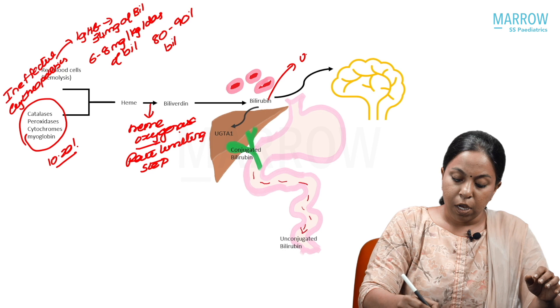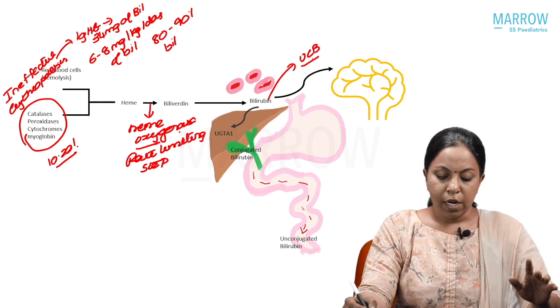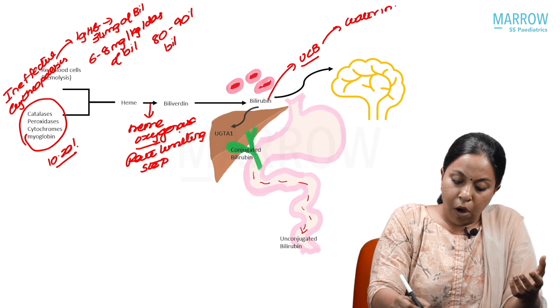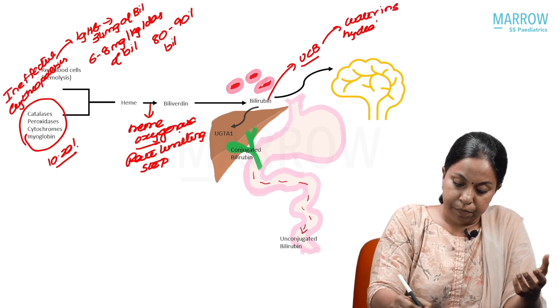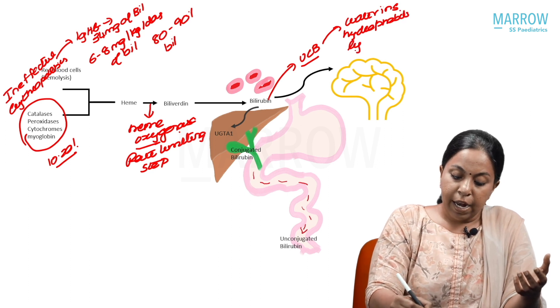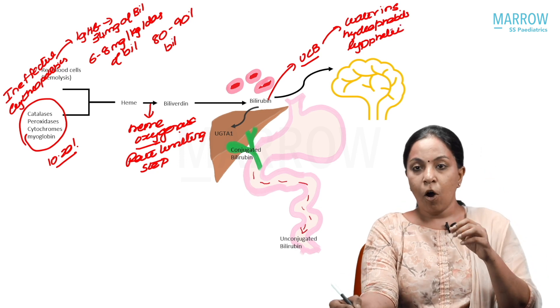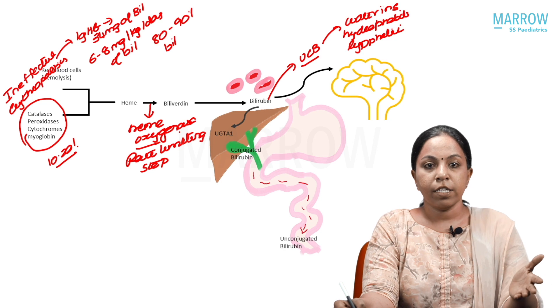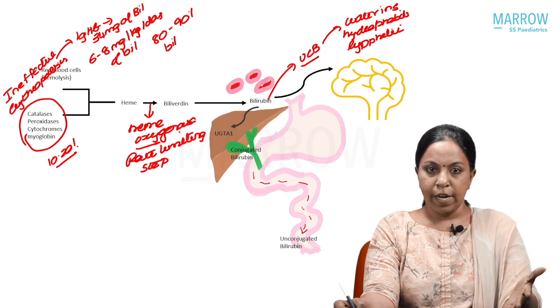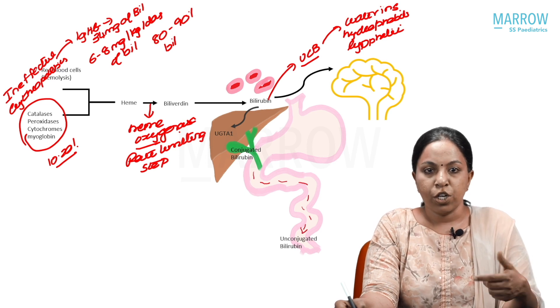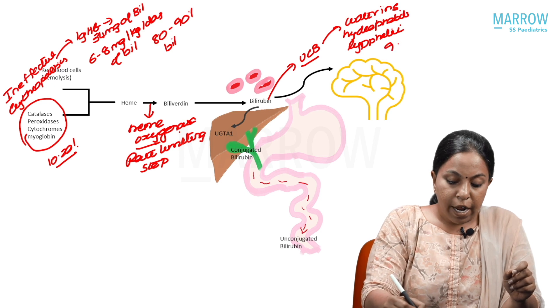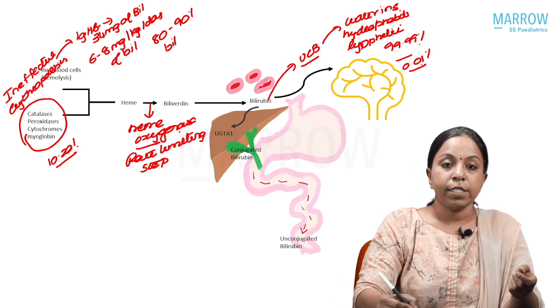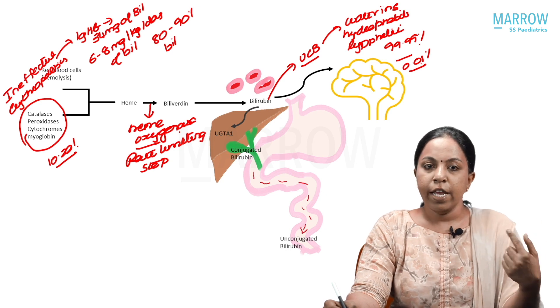This bilirubin is called unconjugated bilirubin. Unconjugated bilirubin cannot be dissolved in water. It is water insoluble, or they call it hydrophobic, or it is also known as lipophilic. If they use any of these terms, it is true about unconjugated bilirubin. This unconjugated bilirubin can circulate in the circulation only when it is bound to albumin. Almost 99.9 percent of unconjugated bilirubin is bound to albumin. Only 0.01 percent of unconjugated bilirubin usually circulates free in the circulation.